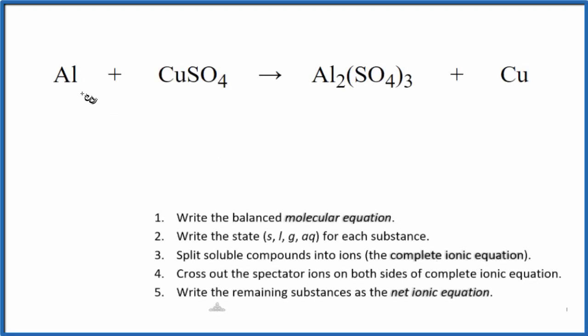In this video, we'll write the net ionic equation for Al plus CuSO4. That's aluminum plus copper(II) sulfate.